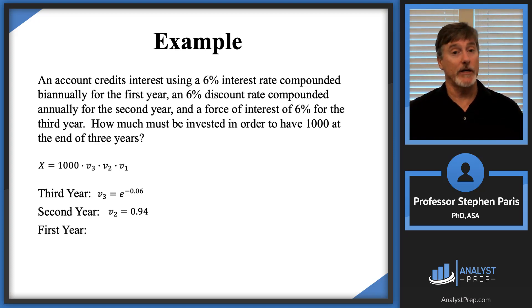Now the first year gets kind of tricky because in the first year, I'm told that I got a 6% interest rate compounded biannually. So compounded biannually means I got an I upper 1.5. I upper 1.5 is 6%. I take the I upper 1.5, divide it by 1.5. That gives me a 12% or 0.12. That's my biannual effective interest rate.